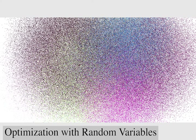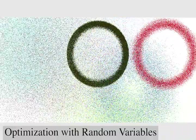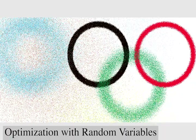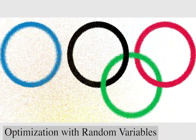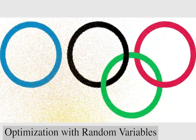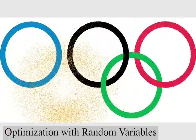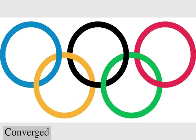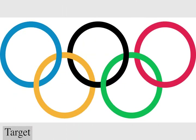We introduce another approach involving randomized variables. Initially they have high variance, but during optimization the variance reduces as we approach convergence. Notice the ring ordering is now correct compared to the target image.